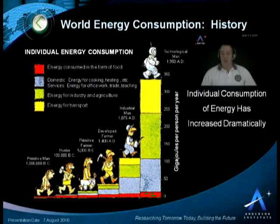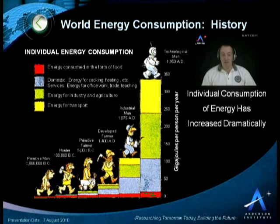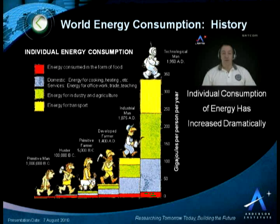Throughout history, we've seen individual consumption of energy increasing dramatically. As you can see on this chart, from the left we show primitive man, hunting man, farming man, followed by industrial man and technological man. On the right axis, you'll see individual consumption of energy in gigajoules per person per year. As human society has evolved on this planet, energy consumption has moved from consuming energy just in the form of food, to energy for cooking and heating, eventually for office work, trade, and teaching, then industry and agriculture, and finally for transport, resulting in a dramatic increase and drain on world energy supplies.